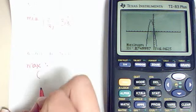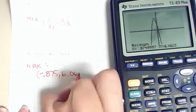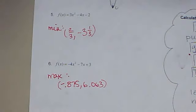And our answer here is negative 0.875 and 6.063. We do want to round to three decimal places here if we are going to stick with fractions.